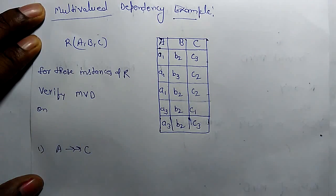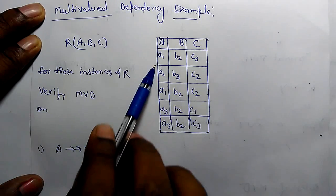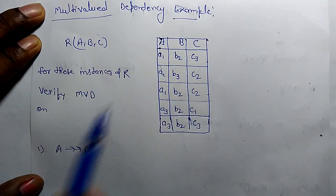There is relation R. It has three attributes: A, B, C, and instances of attributes are in this table.